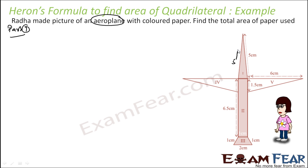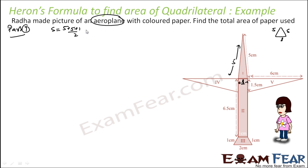By symmetry, parts 1 and 5 are the same. This triangle has sides 5, 5, and 1. So we need to find the area of this particular triangle. We can first find the value of s: that is (5 + 5 + 1) / 2, which is 5.5 cm. So with that we can find the area easily.